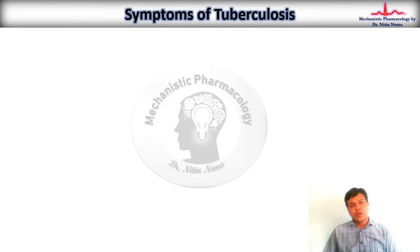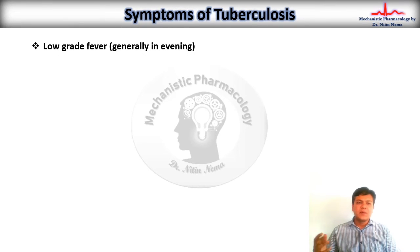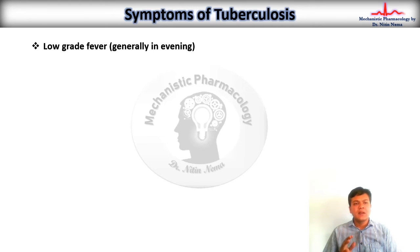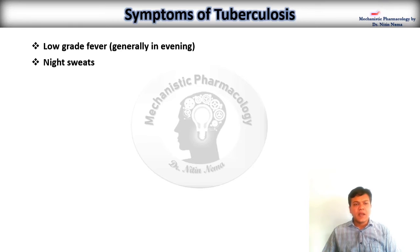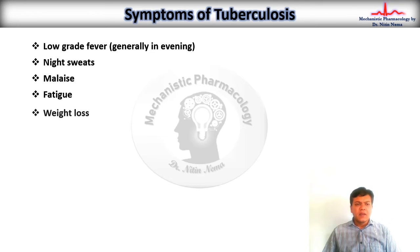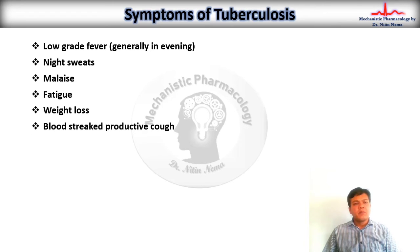Heading towards the symptoms of tuberculosis — symptoms vary depending upon the type of exposure and microorganism. However, some common symptoms associated with tuberculosis are low-grade fever that occurs generally in the evening, night sweats, malaise meaning the feeling of uneasiness or discomfort, fatigue, weight loss, and blood-streaked productive cough.